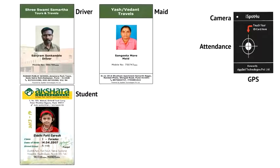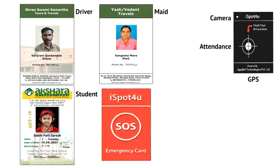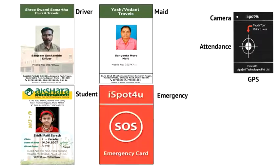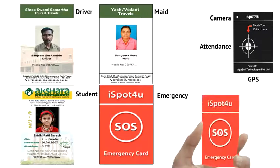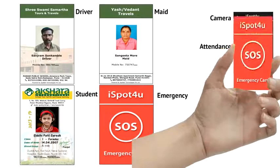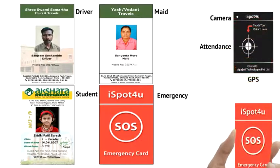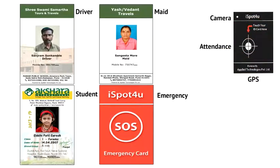There are situations when we need to get notification of an emergency. iSpot4U gives a red card for SOS or emergency reporting for every bus. When the red card is tapped on the device, it sends an emergency notification or SOS to pre-registered numbers.